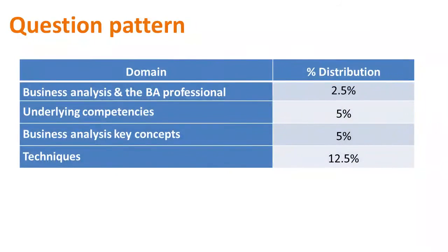The ECBA question pattern is as follows: Techniques get 12.5%, Underlying Competencies get 5%, Business Analysis Key Concepts get 5%, and Business Analysis and the BA Professional get 2.5%.